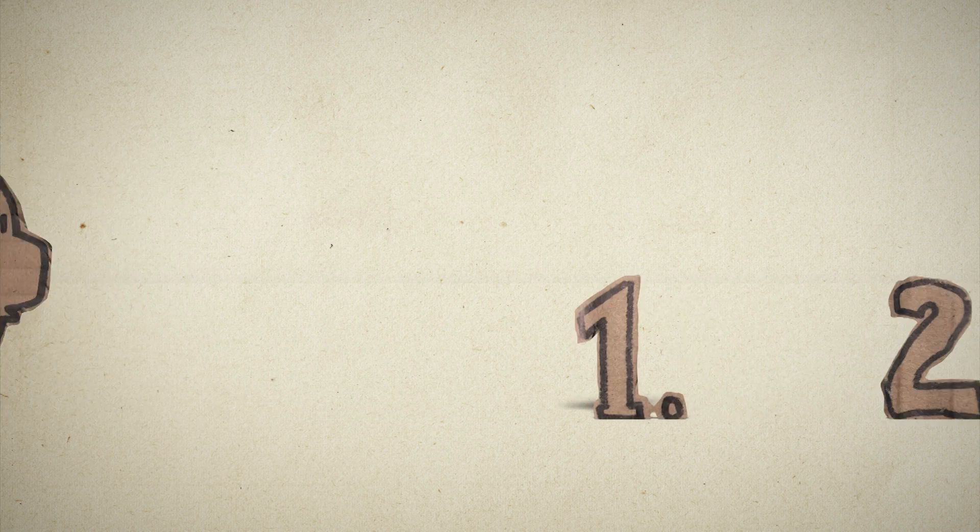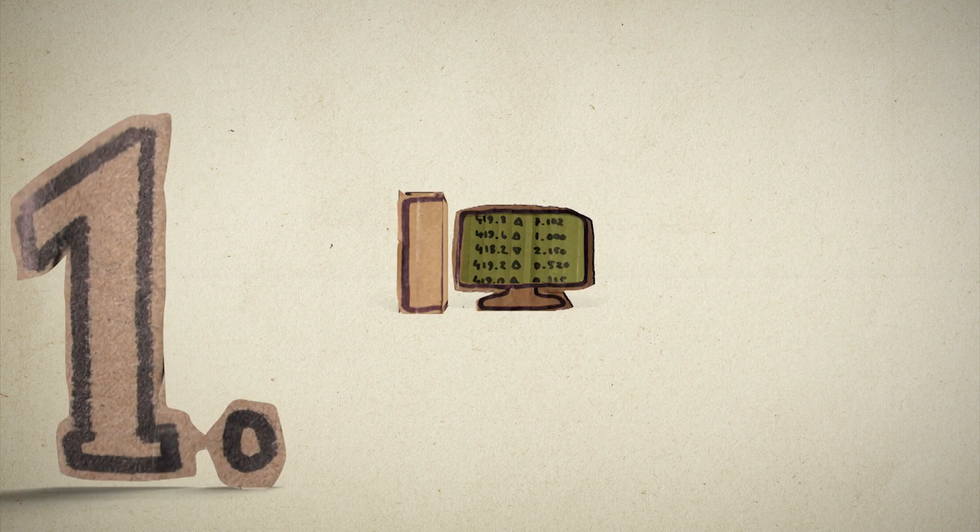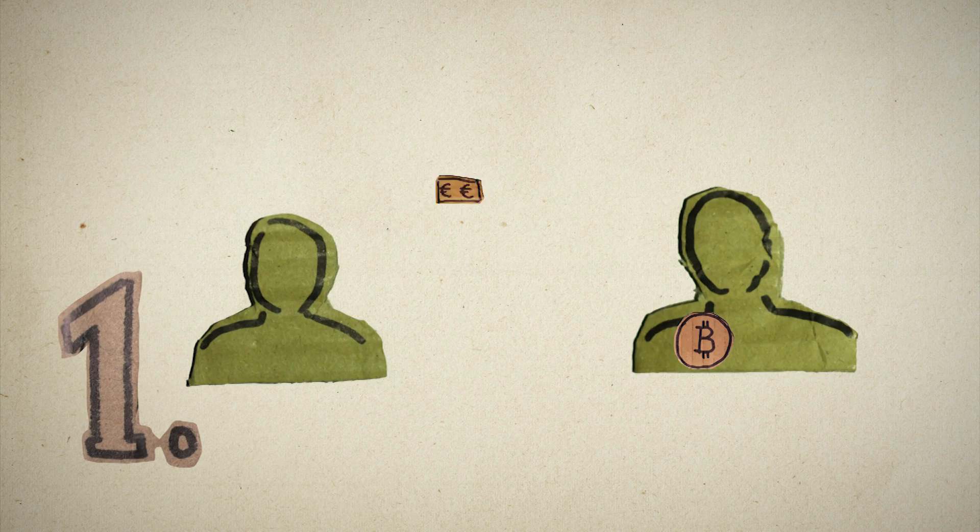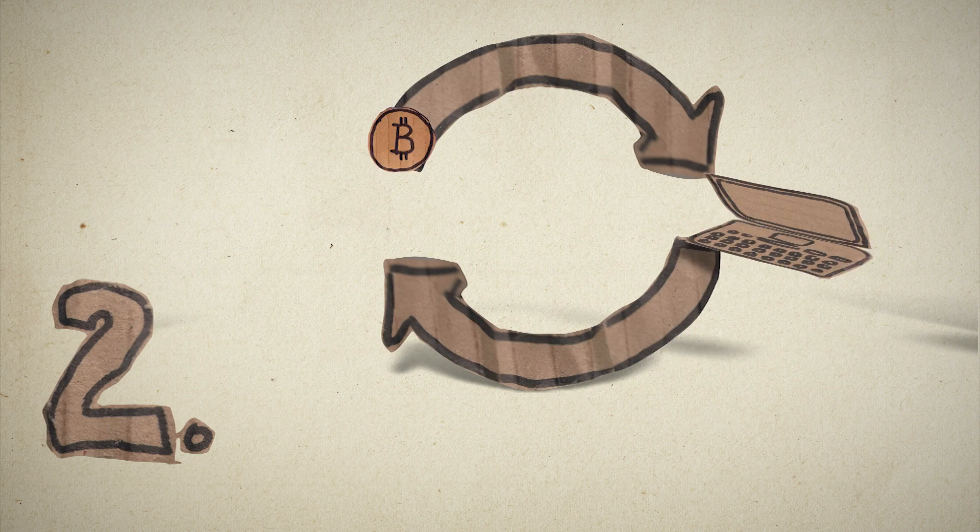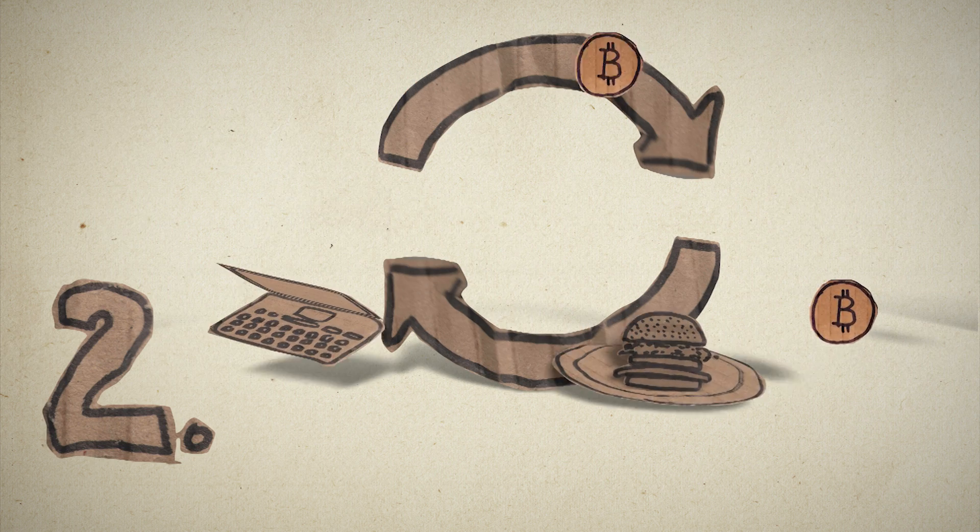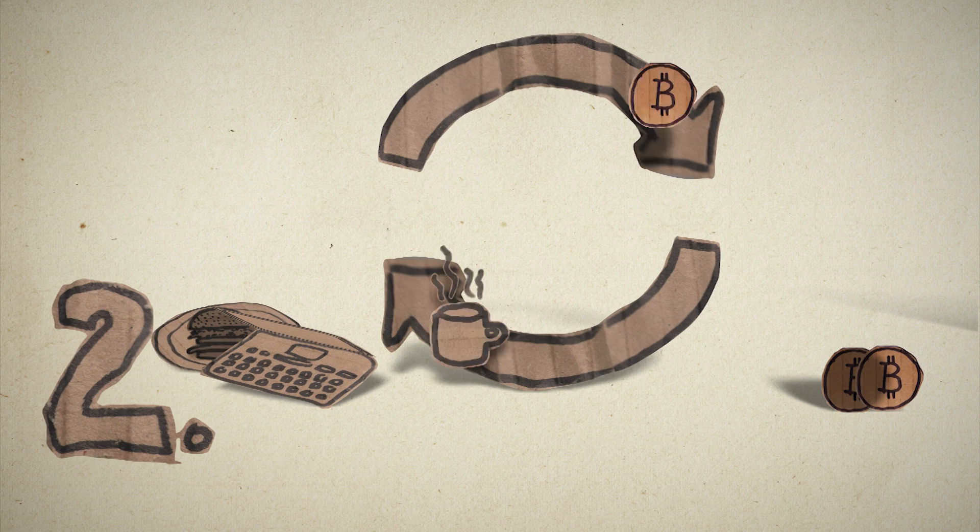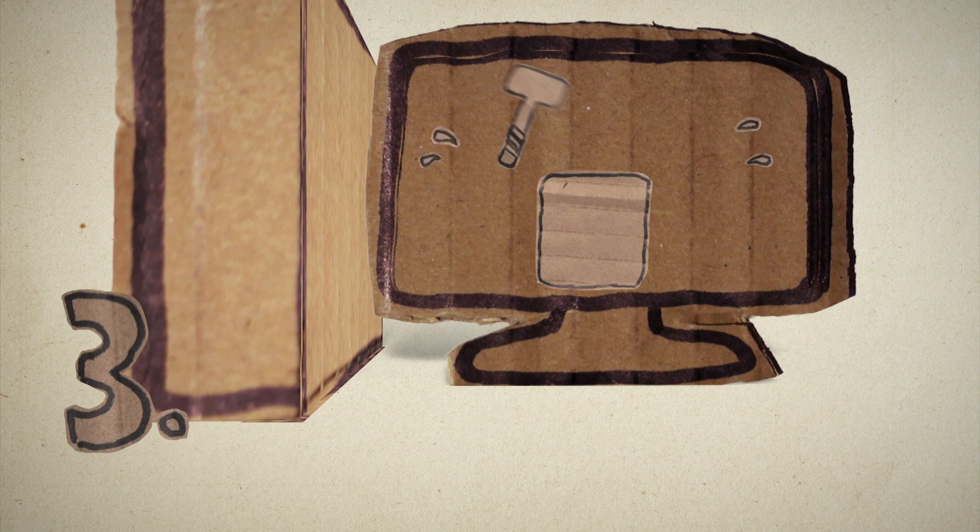There are three different ways of getting Bitcoins. You can buy them directly from Bitcoin exchanges and from other people, or you can exchange them for goods and services, or you can mine them yourself with a computer.